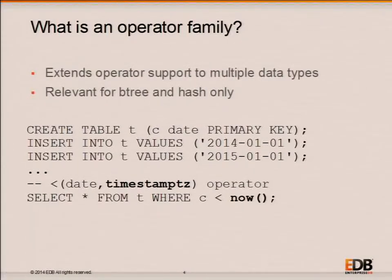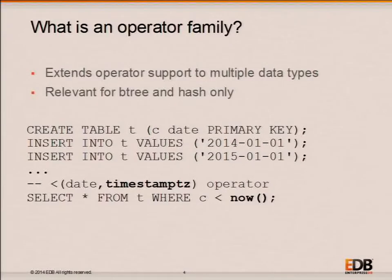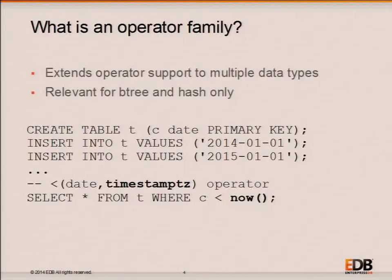There's a tightly related concept to operator classes called operator families. Their role is to extend operations to cover situations involving more than one data type. When indexing, you're only dealing with one data type. However, when searching an index, the search condition may not be of the exact same data type. For example, there's an operator family called date_time_ops, which ties together comparisons between the date data type and the two timestamp data types. As a result, the system knows it can search through an index built on a date column using a timestamp search condition.